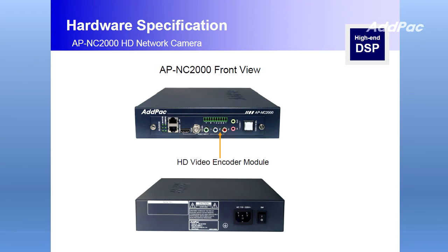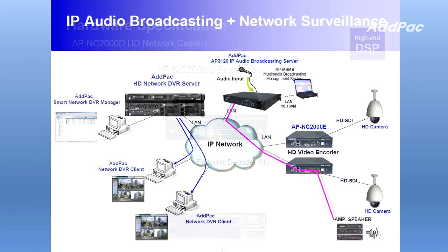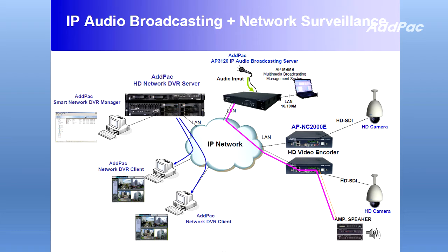AFI-NC2000 and AFI-NC2000D HD video codec is a next generation HD video server based on high performance video DSP. It provides excellent performance based on H.264 high-quality HD for video applications such as video surveillance, traffic control, environment surveillance and disaster prevention.